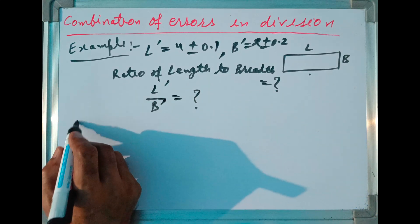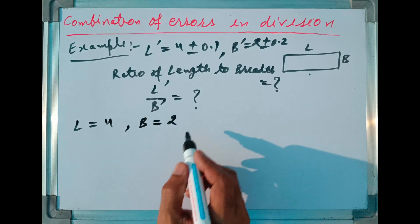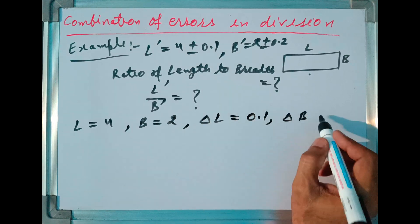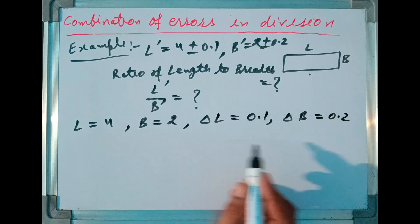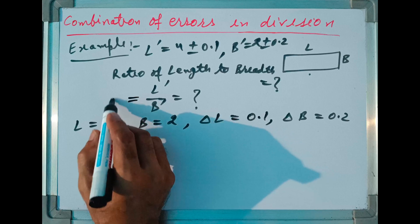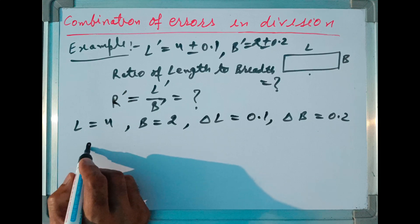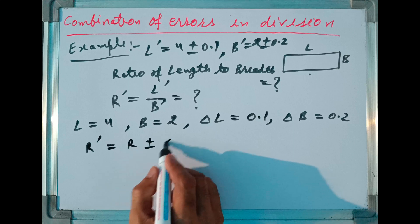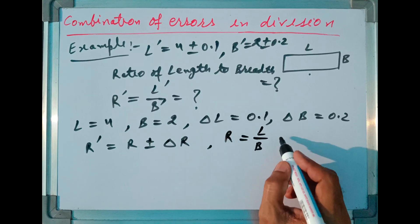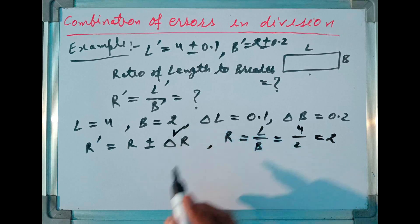From the given values, the actual value of length is 4, the actual value of breadth is 2, the absolute error in length is 0.1, and the absolute error in breadth is 0.2. Using this data, I can calculate the absolute error in the ratio. Let me call this ratio R. For calculating this ratio, R dash is equal to R plus or minus Delta R. R, the ratio of actual values of length to breadth, is 4 divided by 2, which equals 2. Now our question is: what is the value of Delta R?